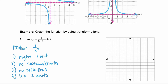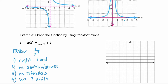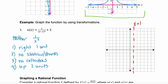So our two big transformations are right 1 unit and then up 2 units. To do that, we can take that mother function — this graph here on the right — find some key points, and then shift them right and then up. Starting with the asymptotes: we have asymptotes of the y-axis and the x-axis. If we shift the vertical asymptote on the y-axis right 1 unit, we end up with an asymptote at x equals 1. Likewise, the horizontal asymptote on the x-axis moves up 2 units to y equals 2.